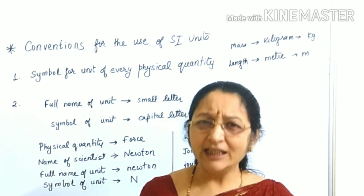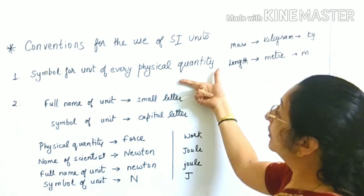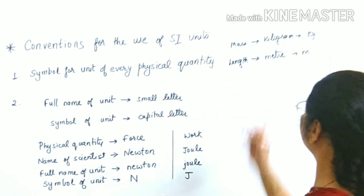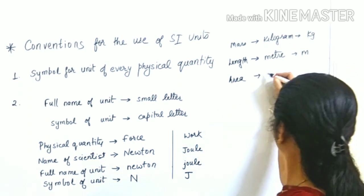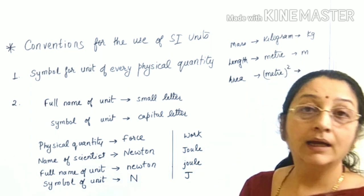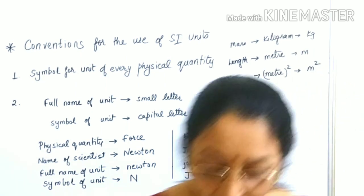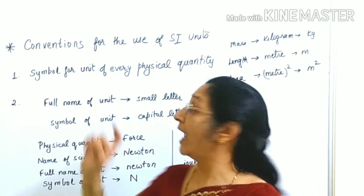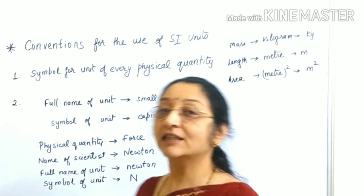So in this way, every physical quantity, whether fundamental or derived, should have a unit and that unit should have a symbol. This is the first convention.